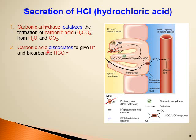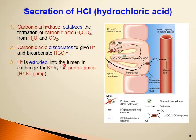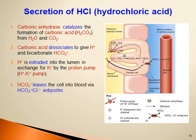Hydrogen ions are extruded into the lumen of the stomach in exchange for potassium, using the proton pump — also called the hydrogen-potassium pump — present in the apical membrane of the parietal cell facing the stomach lumen. This pump is an important target for treatment of peptic ulcer. Bicarbonate generated from carbonic acid dissociation leaves the cell into the blood to maintain appropriate intracellular pH.